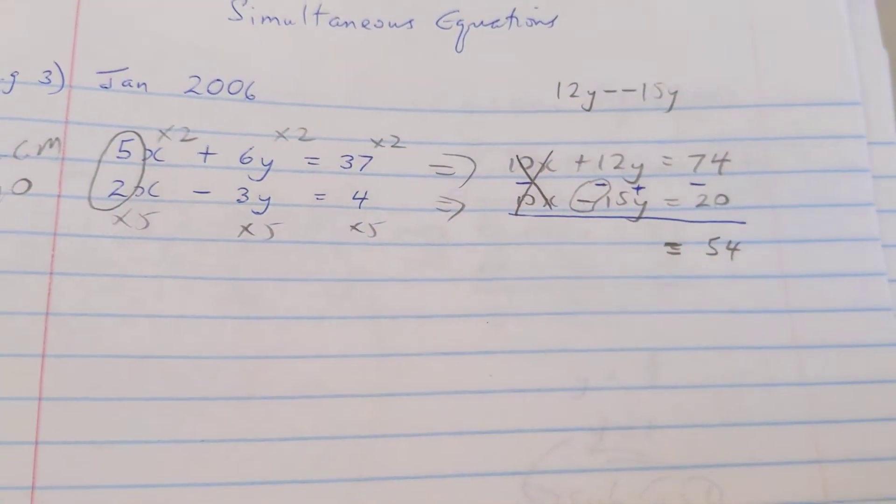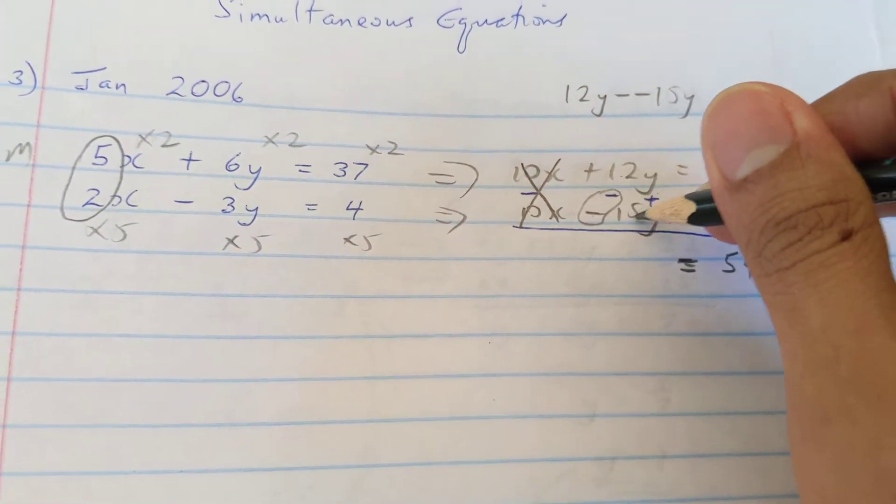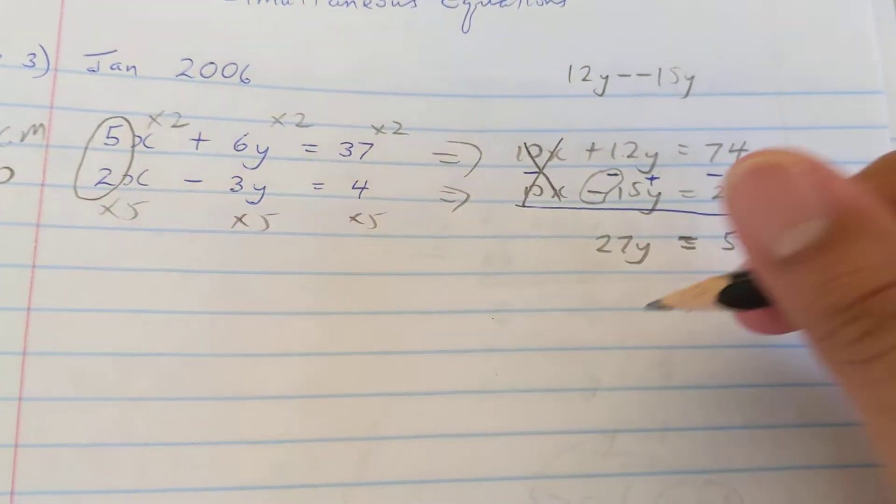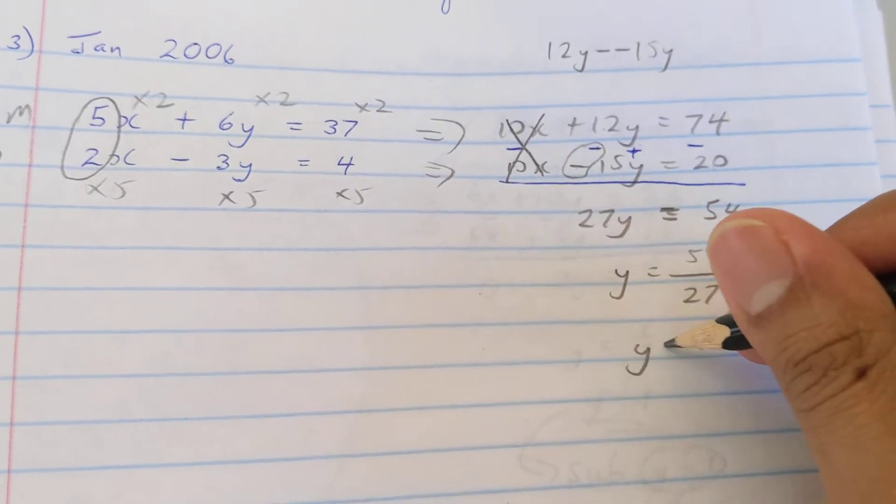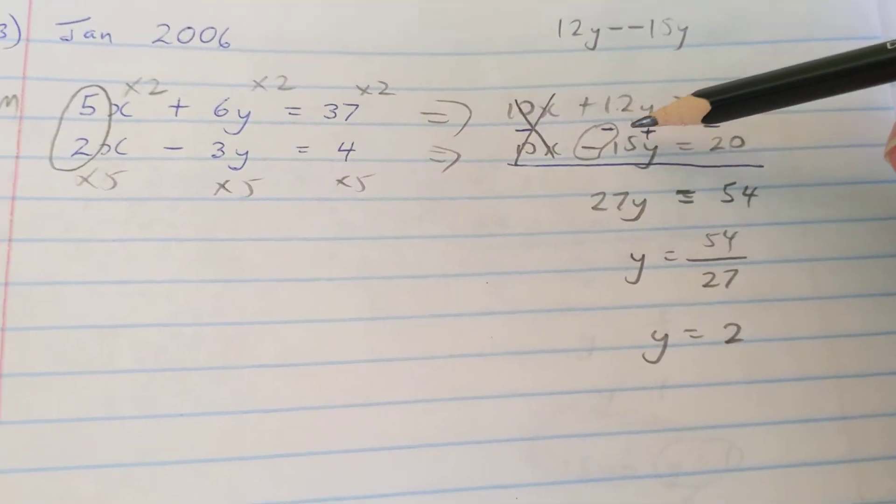So that really turned into 12 plus 15, so I really am going to get 27y. Now the rest of the question is going to continue as before. Divide by 27, so y is going to be 2. So that's the only difference that you want to pay attention to, the sign change.